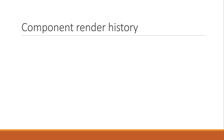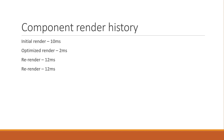...your component rendering history could be something like this: 10 milliseconds for initial render, 2 milliseconds for optimized render, 12 milliseconds for re-render, 12 milliseconds for re-render, 12 milliseconds for re-render, 12 milliseconds for re-render — and you get the point.